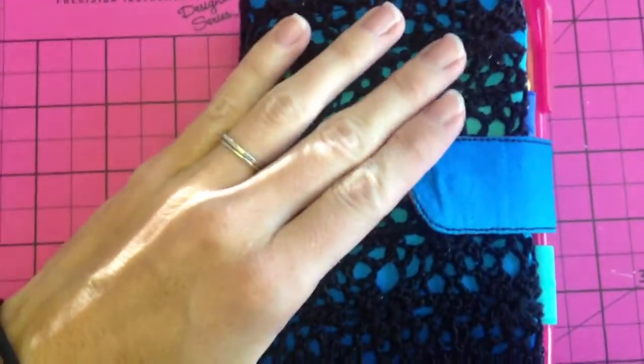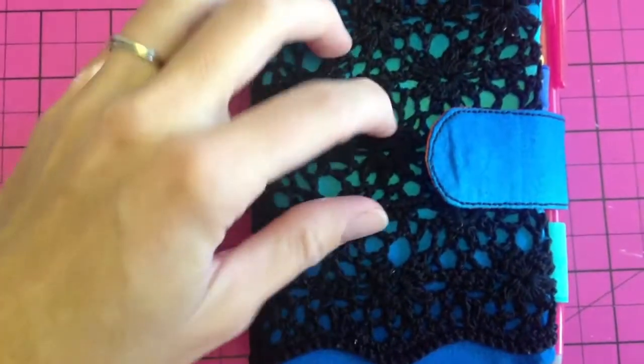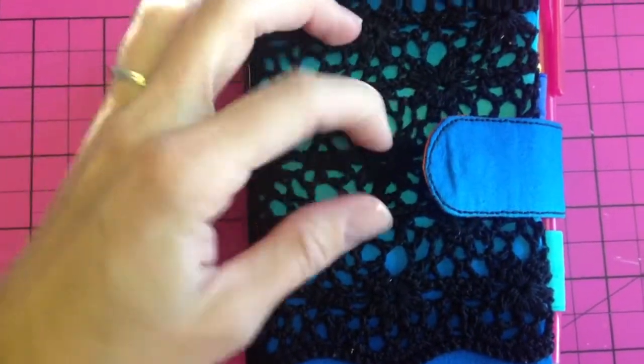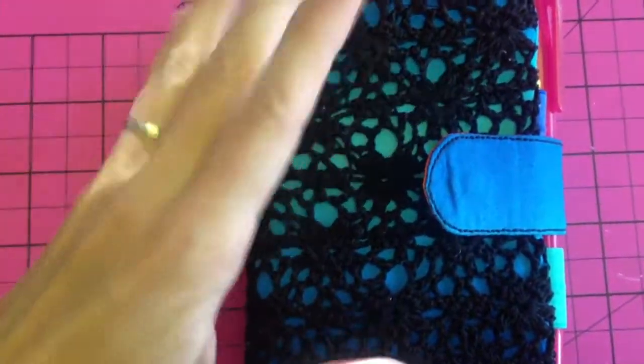Hopefully this is going to work for a wallet. Now, this is crochet that I had made, and it's sewn down so it's a little loose in some places, but I just did some lines across to make sure that it wasn't going to be completely loose.